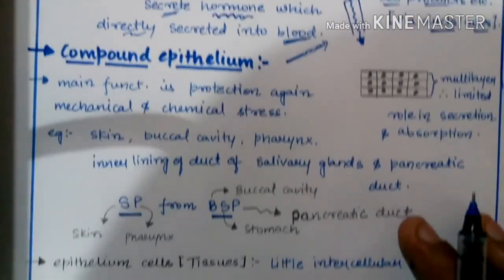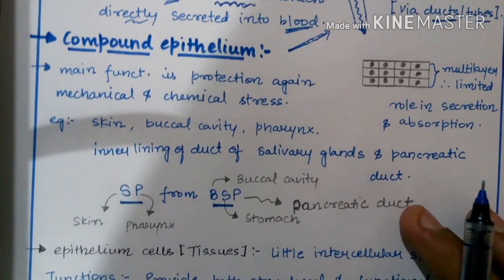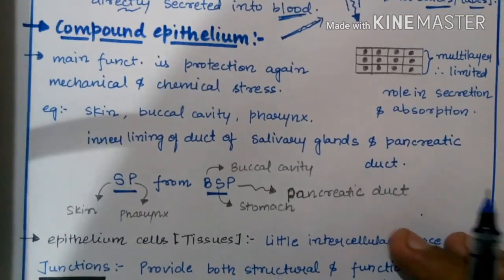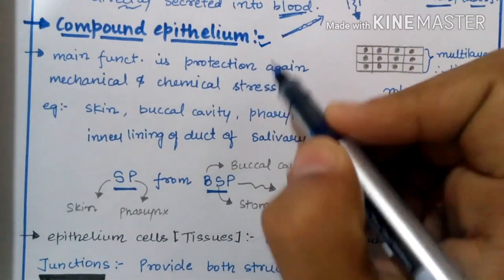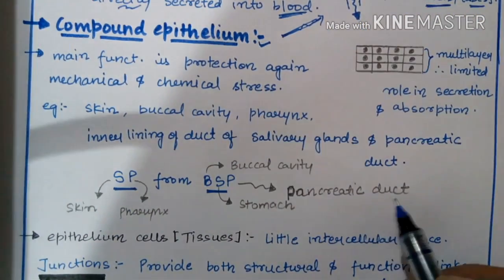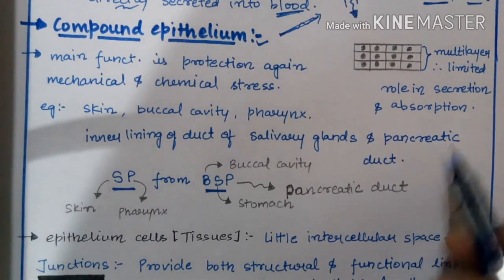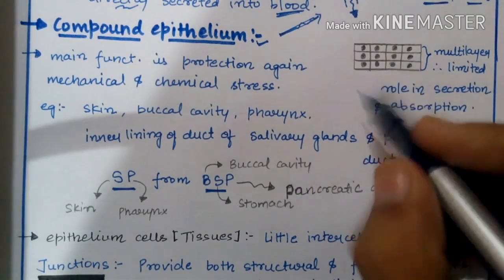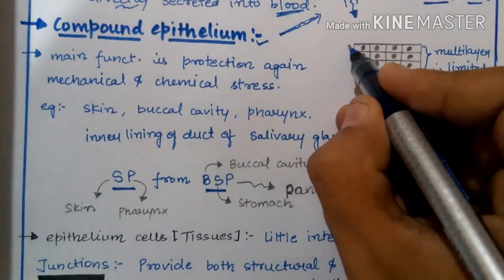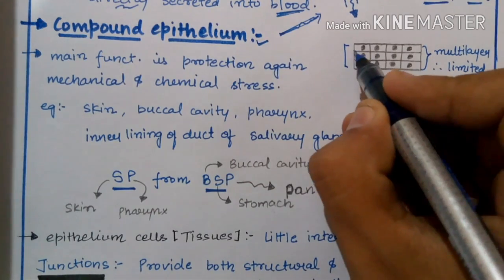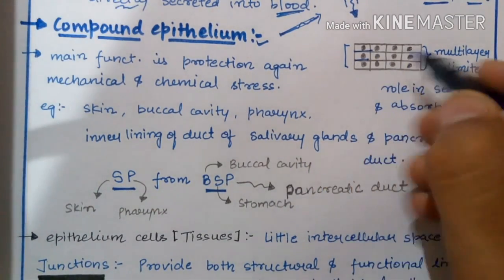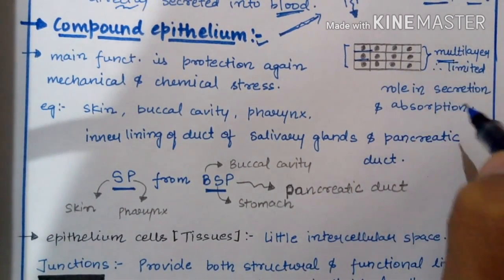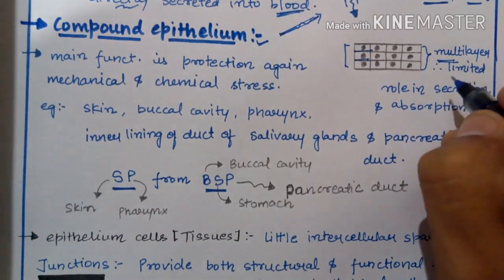This concludes simple epithelium. Now let us move towards compound epithelium. Compound epithelium is multi-layered — as discussed in the previous lecture. It has more than one layer, which is why it is known as compound epithelium.